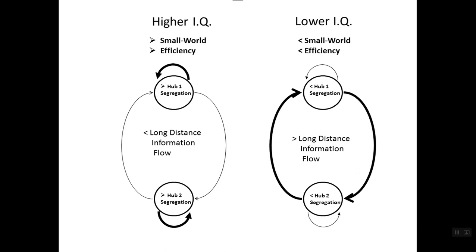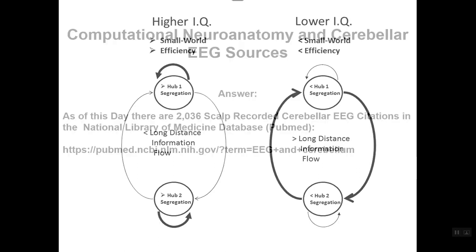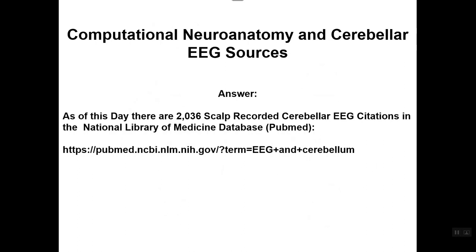We also in science use inverse solutions and look at the phase slope index between hubs in the brain, between the Brodmann areas. Now, computational neuroanatomy and cerebellar EEG sources. You can measure the cerebellum. The cerebellum is one-tenth the size of the cerebral cortex but has about the same number of neurons. It's an amazing part of the brain. It's a bit of a mystery because it's folded in the back of our necks. There's 2,036 citations in the National Library of Medicine. If you go to the PubMed National Library of Medicine database, type in EEG and cerebellum, you'll get 2,036. I did this a month ago, so there's probably more publications now.